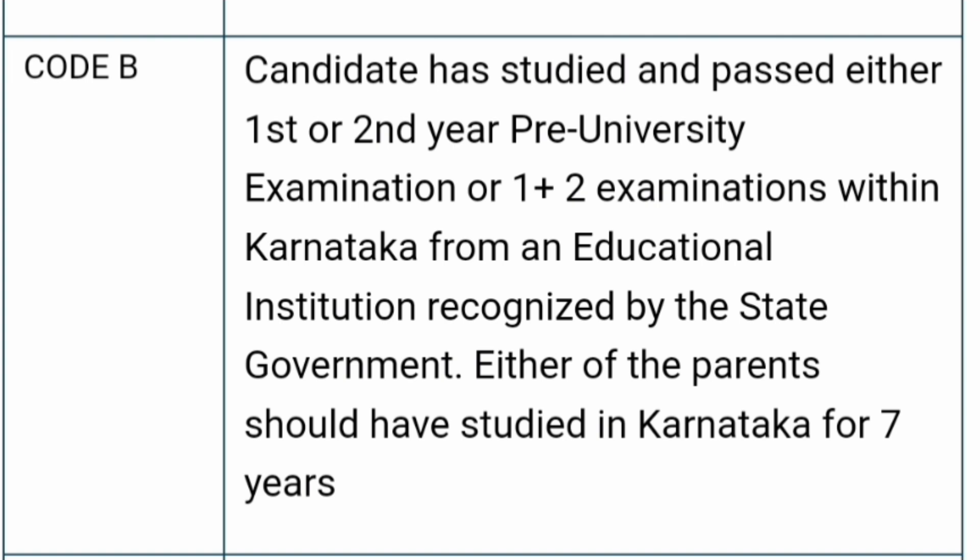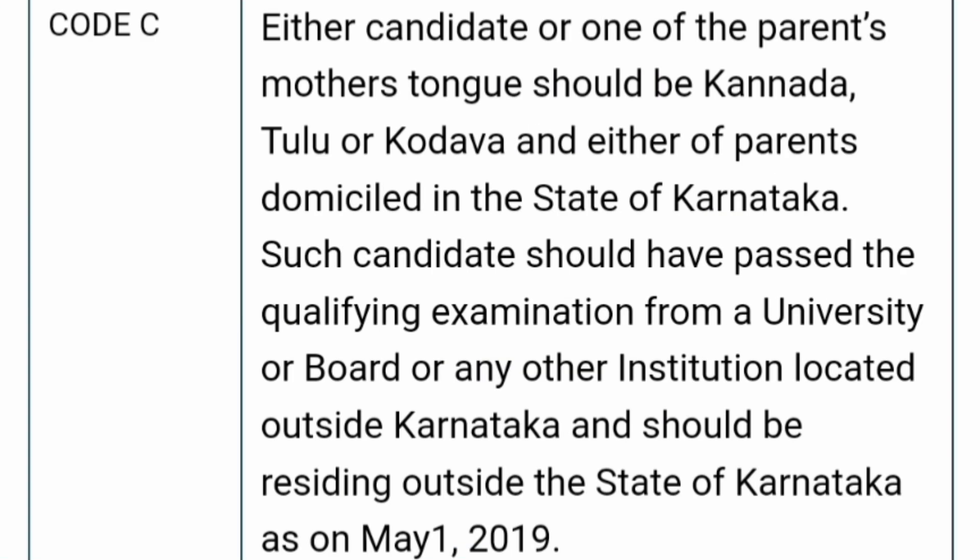In this case you have not studied in Karnataka for 7 years, but your parents have studied in Karnataka for 7 years, so you hold eligibility code B as a domicile of Karnataka. For code C, either the candidate or one of the parents' mother tongue should be Kannada, Tulu, or Kodava, and either of the parents should be a domicile of Karnataka. Such a candidate should have passed the qualifying examination from a university, board, or any institution located outside Karnataka.